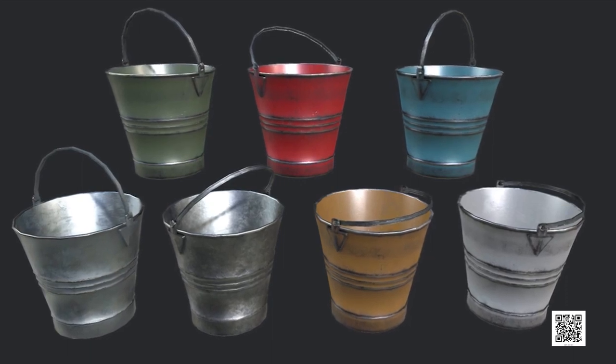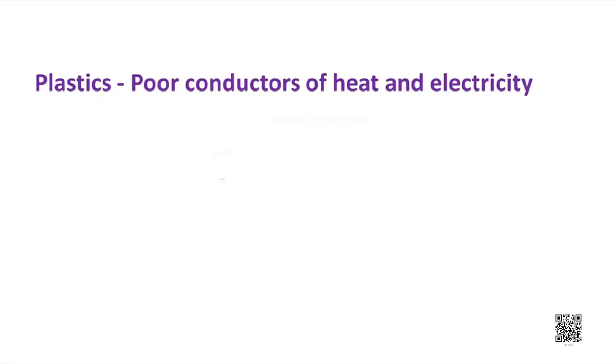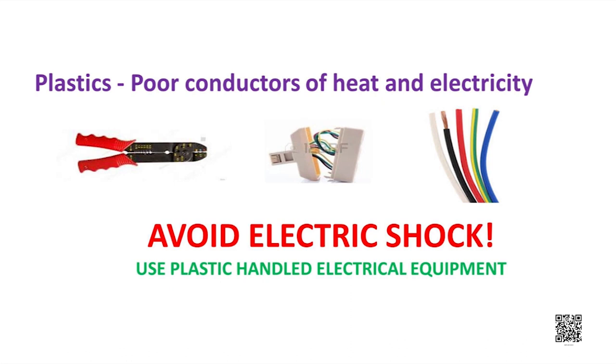In the past, buckets and mugs were made up of metals, but now these materials have been replaced by plastics. The advantages of plastic containers are that they are very light, strong, durable, and can be molded into different sizes and shapes. Most electric wires and equipment have plastic covering, and handles of electric testers are made of plastic, because plastic is a poor conductor of heat and electricity. It is advisable to use plastic-handled electrical equipment to avoid electric shock.